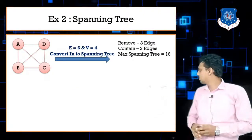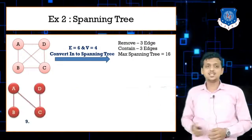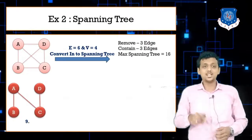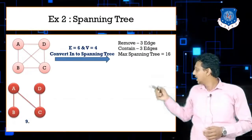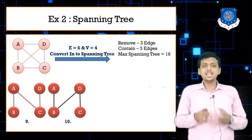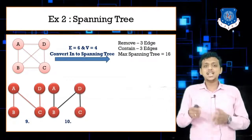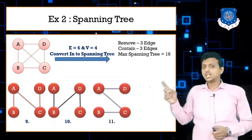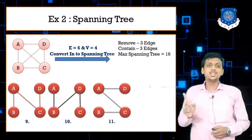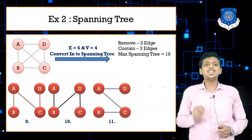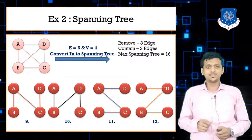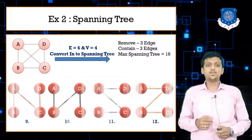Next we have spanning trees 9 through 12. Number 9 forms a Z shape: A-B, B-C, C-D. Number 10 is A-B, B-D, D-C. Number 11 is B-A, A-D, A-C, C-B type. Number 12 is A-D, B-C. That makes another 4 spanning trees, giving us 12 total so far.